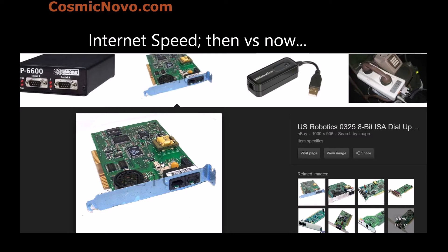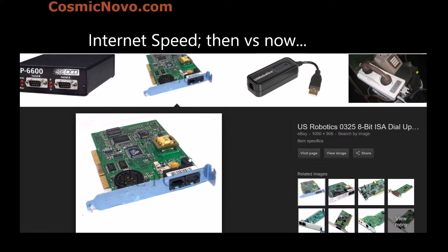These modems connected at 56k maximum potential connection speed — 56 kilobits. And most of the time you never actually got that speed. The fastest I've seen was 48 kilobits per second, which at the time was fairly fast. Unfortunately, when you used dial-up modems, you could not use your phone line, so nobody could call you.